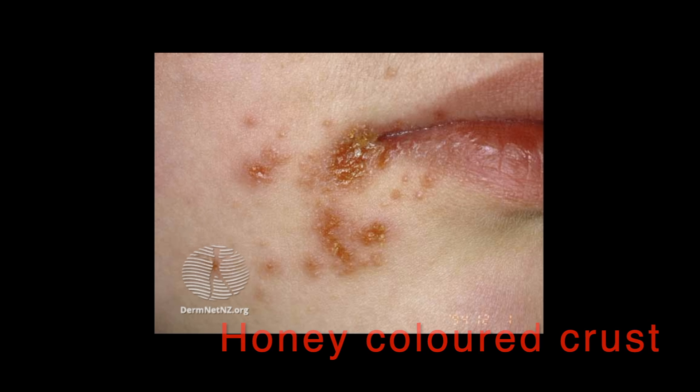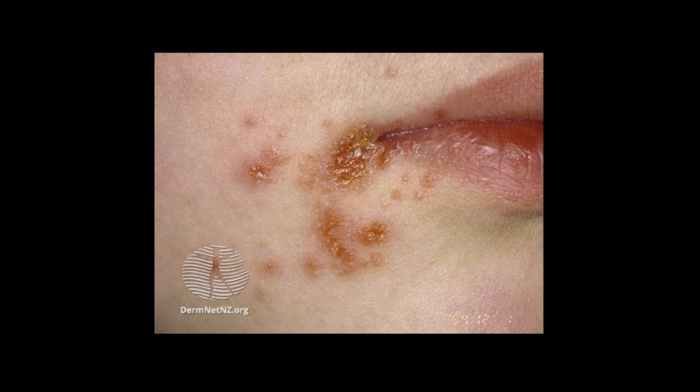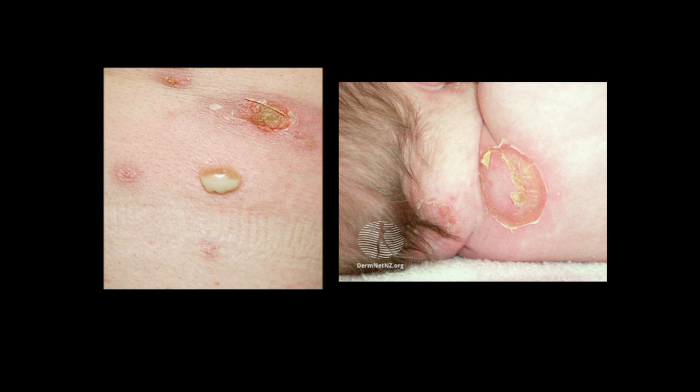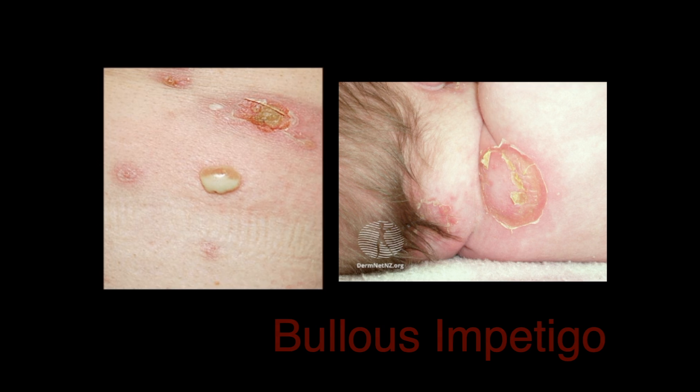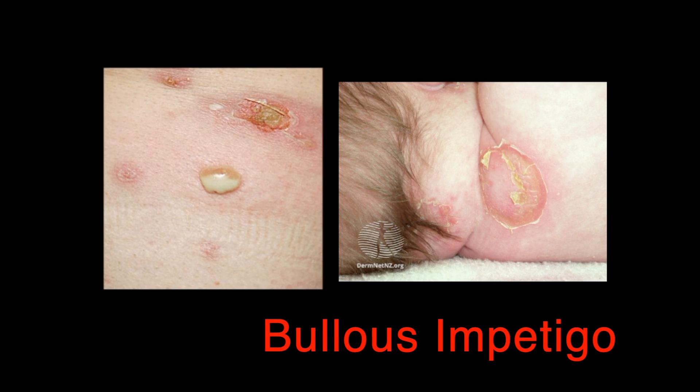Untreated non-bullous impetigo usually resolves within two to four weeks without scarring. Although many children are otherwise generally well, some can develop lymphadenopathy, mild fever, and general malaise. Now let's look at the other major type, which is bullous impetigo.